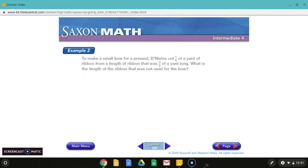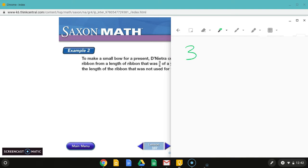All right, so here is our next problem. To make a small bow for a present, Denetra cut one-fifth of a yard of ribbon from a length of ribbon that was three-fifths of a yard long. So the ribbon started at three-fifths. She cut one-fifth off. What is the length of the ribbon that was not used? So we have to look at some keywords in here. So she cut one-fifth off. The ribbon was three-fifths of a yard long. So now we have to find how long it is now. So this is actually a subtraction problem. We will be subtracting these fractions. So the ribbon started at three-fifths. She cut one-fifth off. So three-fifths minus one-fifth. All we're doing is subtracting the numerator. Three minus one is two. And the denominator stays the same. So two-fifths of a yard is what is left.